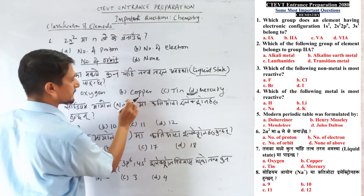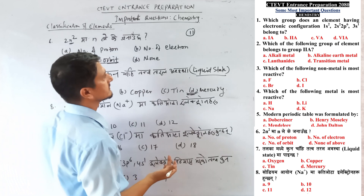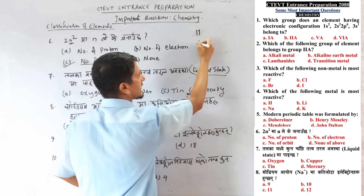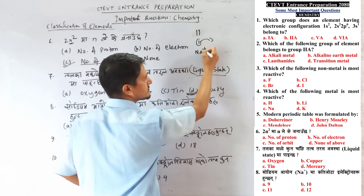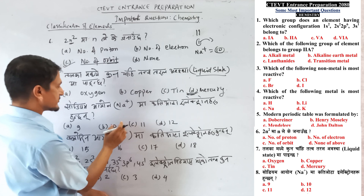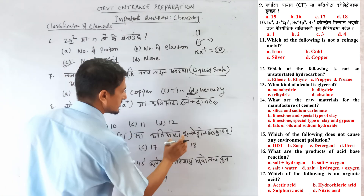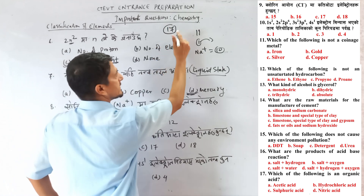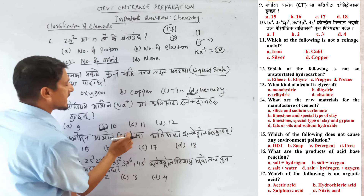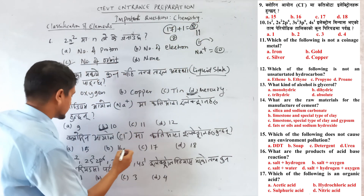Question number 8: How many electrons does the sodium ion Na+ have? Sodium has 11 electrons. Since Na+ means it has given away 1 electron from its outer shell, 11 minus 1 equals 10 electrons. Question number 9: Chlorine ion Cl- — chlorine has 17 electrons; its outer shell has 7. It gains 1 electron to complete the octet, so 17 plus 1 equals 18 electrons.